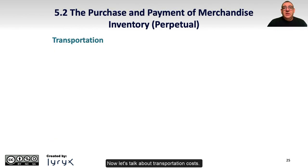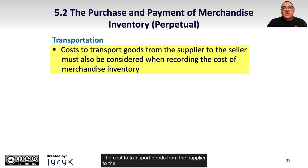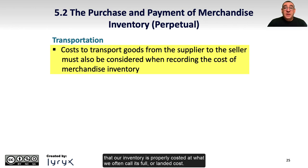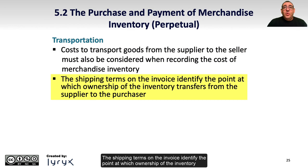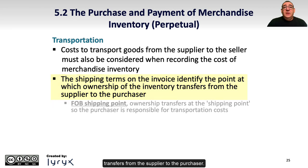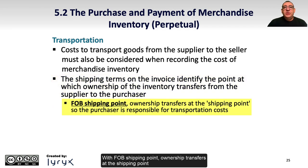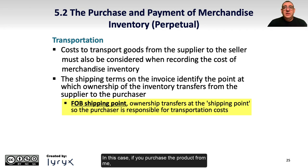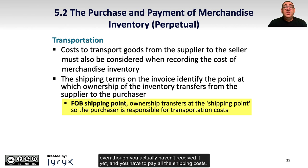Now let's talk about transportation costs. The cost to transport goods from the supplier to the seller must also be considered when recording the cost of merchandise inventory, to ensure that inventory is properly costed at what we often call its full or landed cost. The shipping terms on the invoice identify the point at which ownership of the inventory transfers from the supplier to the purchaser. With FOB shipping point, ownership transfers at the shipping point, so the purchaser is responsible for the transportation costs. In this case, if you purchase the product from me, that product belongs to you as soon as it leaves my warehouse, even though you haven't received it yet, and you have to pay all the shipping costs.